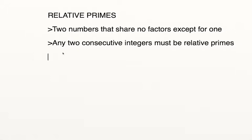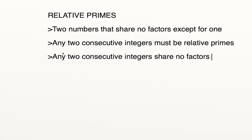And we can prove this inductively, which we'll do in a moment. But the implication here, if any two consecutive integers must be relative primes, is that any two consecutive integers share no factors except for one.